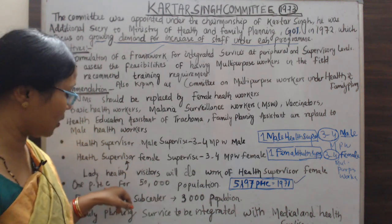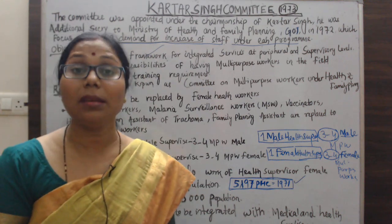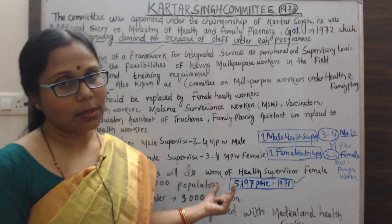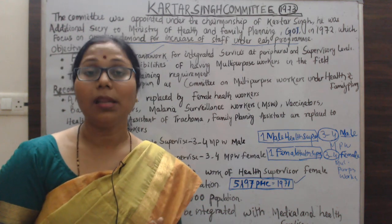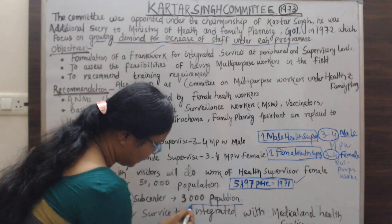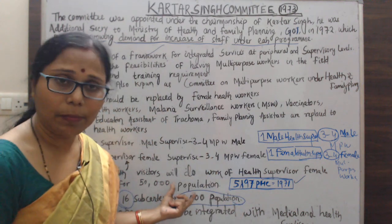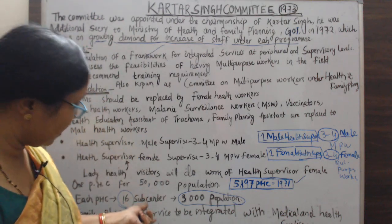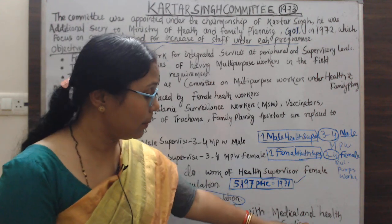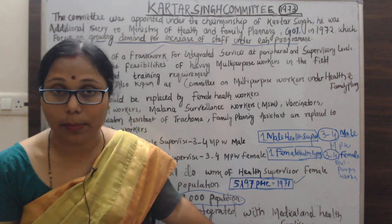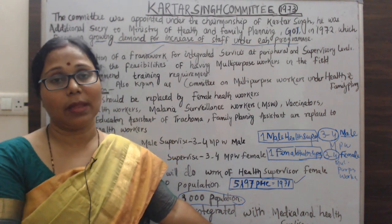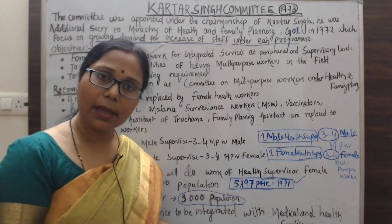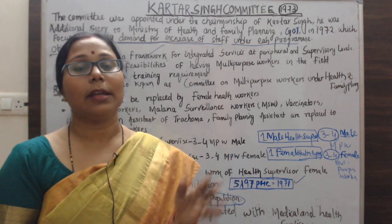In one PHC, there are 16 sub-centers, and one sub-center would be established for 3,000 population. Another recommendation was that family planning services should be integrated with health and medical services, so that family planning programs worked collaboratively with medical care and health services.